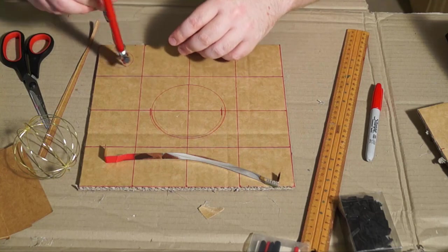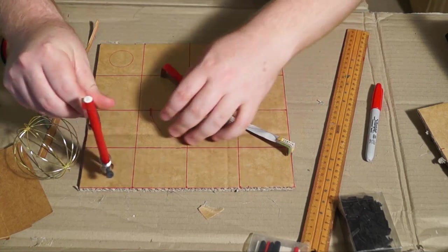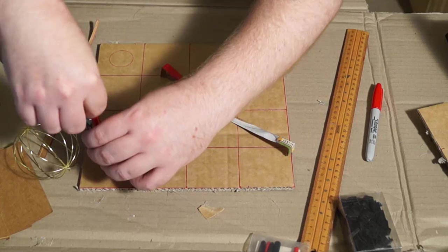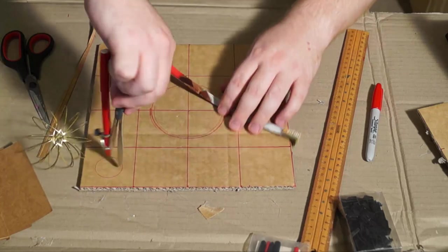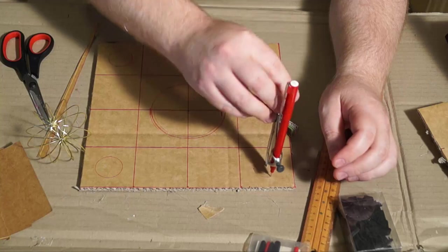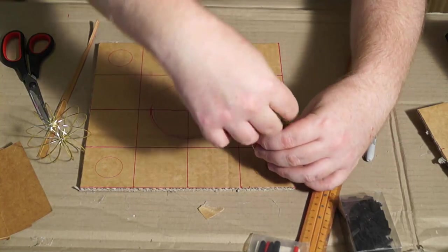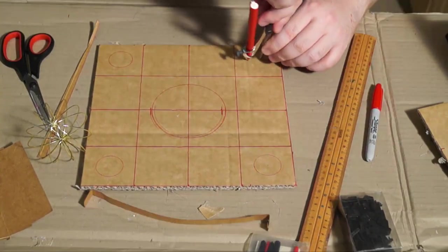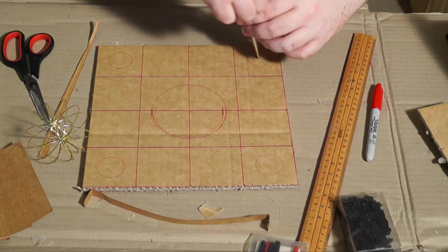Then in each corner, I'm going to measure another circle which is approximately 2cm in diameter. It's about just under an inch. And do that in all 4 corners.